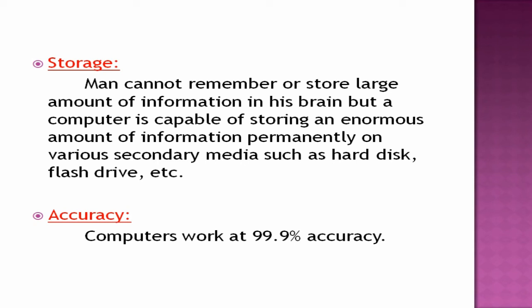Next characteristic: storage. Man cannot remember or store large amounts of information in his brain. But the computer is capable of storing an enormous amount of information permanently on various secondary media, such as hard disk, floppy drives, flash drives, and CD drives. Once it is stored in these storage devices, it is stored permanently and will never get erased.